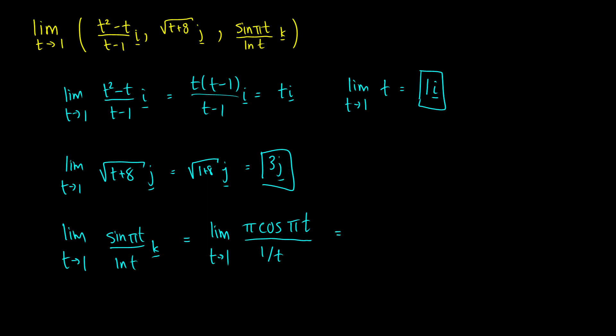So now we can just plug in our values. We're going to get pi times the cosine of pi divided by one over one, which is one. We know that cosine of pi is just equal to one. So our final thing here, and this was all multiplied by the vector k, we're going to get pi k as our limit.